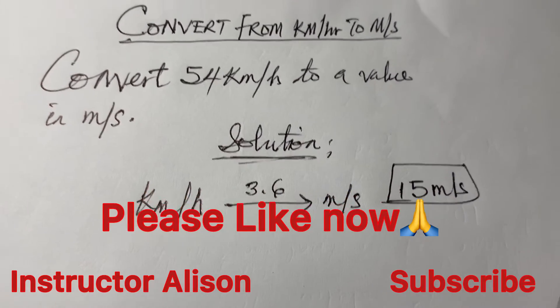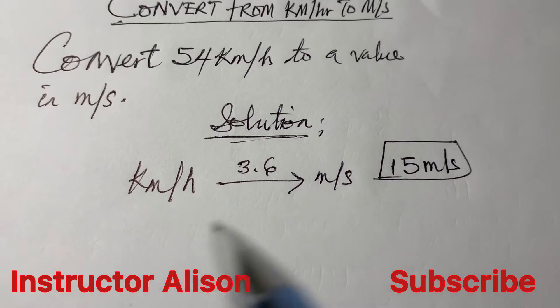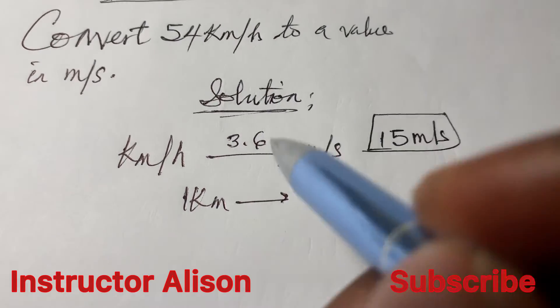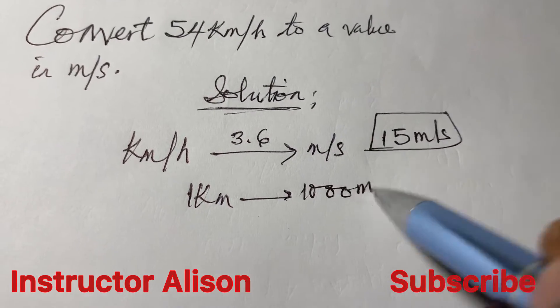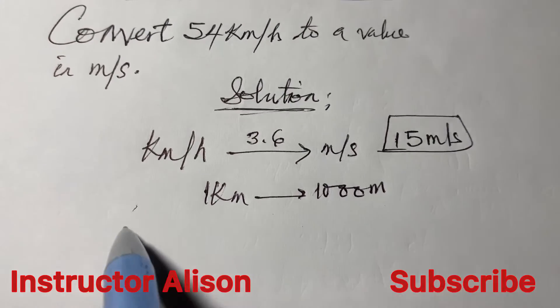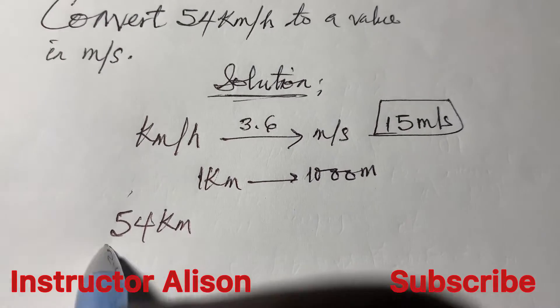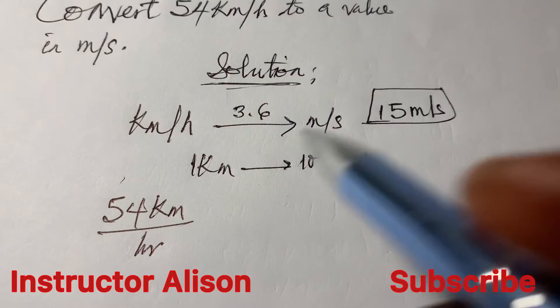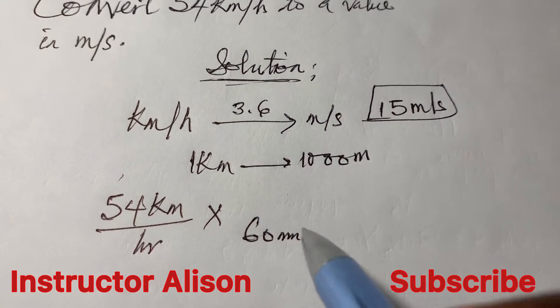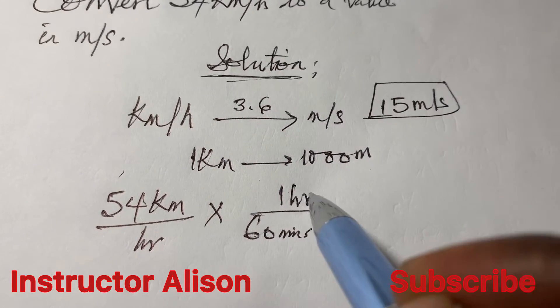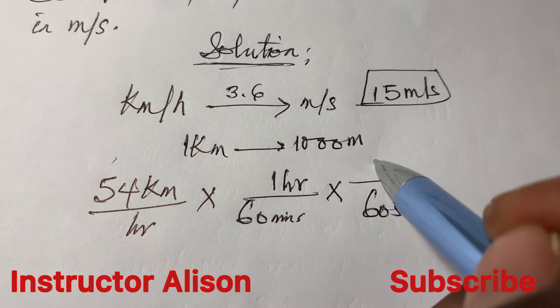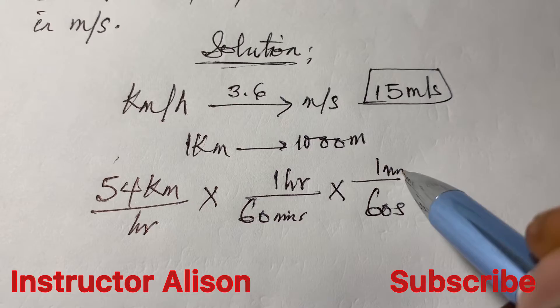But to use the long method is also very simple. Remember that one kilometer will give rise to 1000 meters. So if you want to make this conversion step by step, you're having the value to be 54 kilometer per hour and this will multiply by 1 hour over 60 minutes. Remember that 60 minutes gives you one hour, and also 60 seconds gives you one minute.